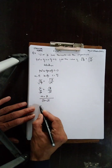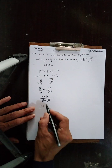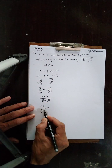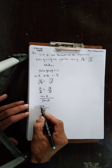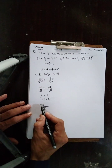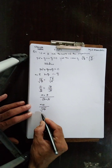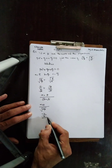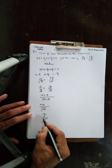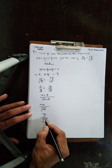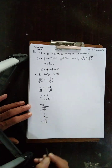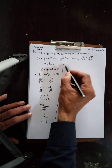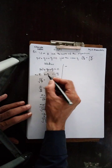اوپر α + β آئے گا اور دونوں الگ الگ radicals کو ایک radical میں رکھ سکتے ہیں۔ Sum of roots α + β کا formula ہے −b/a اور product of roots α × β کا formula ہے c/a۔